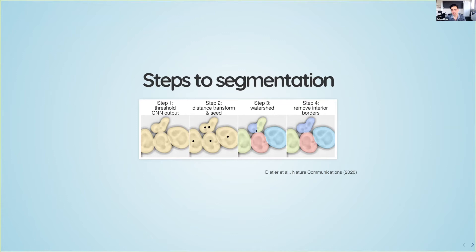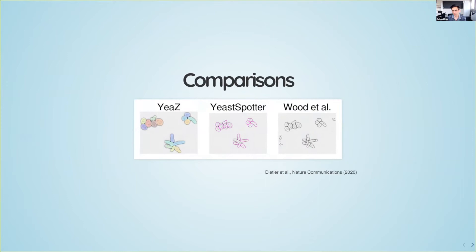A well-known problem is that weirdly shaped cells can produce two seeds, causing the watershed to split one cell into pieces. There are complicated ways of fixing this, such as training yet another neural network, but we found a very simple solution: we go back to the neural network and ask whether a border is fake or real. You go along the border and ask how background-like those pixels are, and this can fix these problems in almost all cases. We pulled images from the internet with no bias and compared against other state-of-the-art methods.